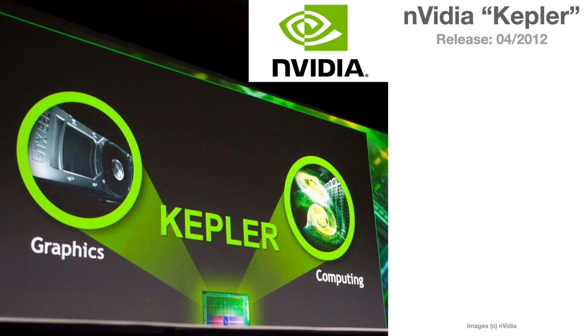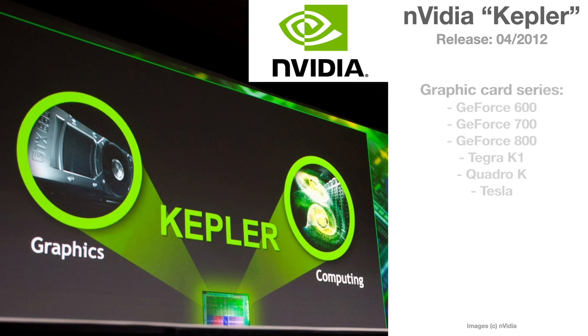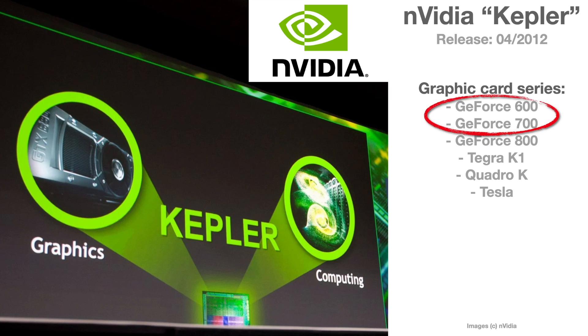Kepler graphics cards are basically Nvidia GeForce 600 and 700 series. They were also used for Tesla, Quadro, or Tegra graphics cards. The GeForce 600 and 700 series were used in some Mac models.